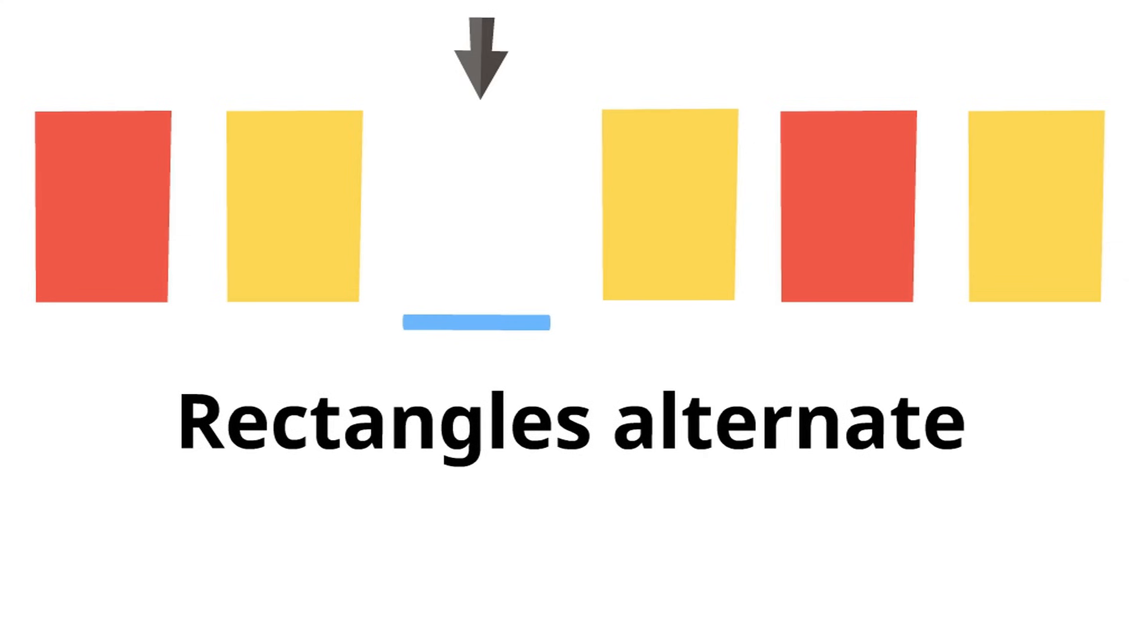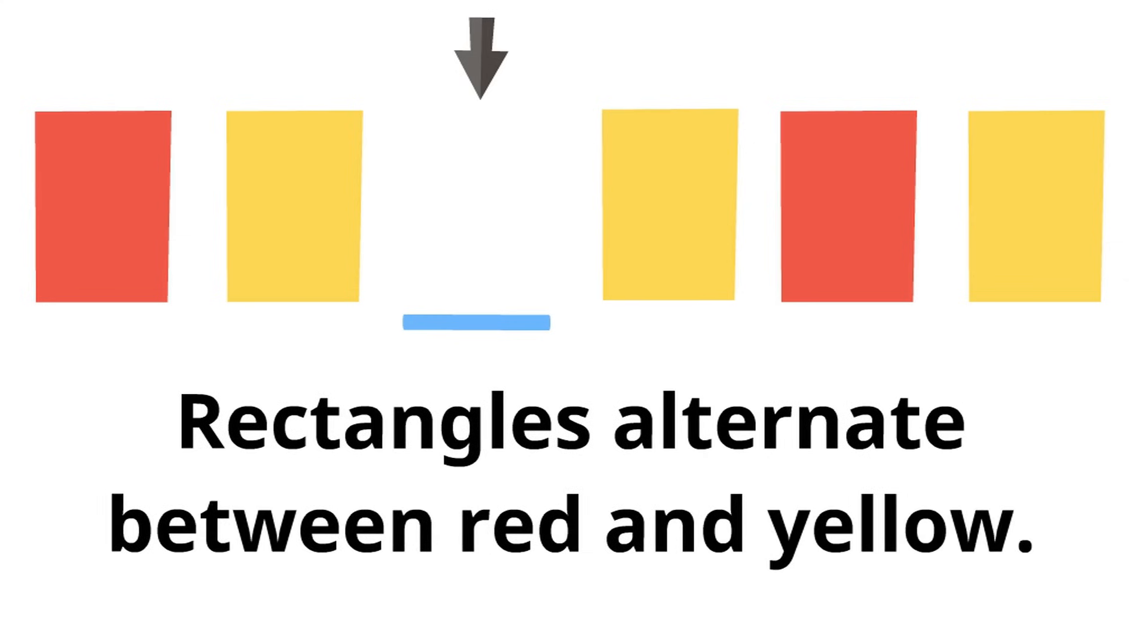Here is the pattern we just showed you. Imagine this spot missing. What belongs in this spot? Well, let's think of this pattern's rule. Rectangles alternate between red and yellow. So what color rectangle goes here? Yeah, a red rectangle. By figuring out the rule, we were able to fill this spot in the pattern.